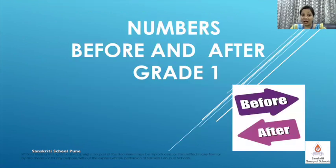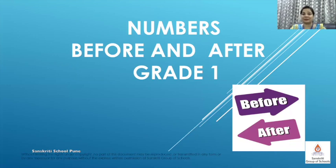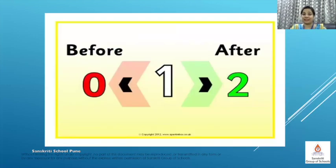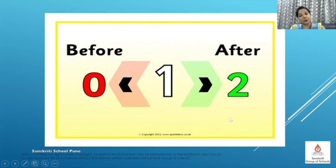Now let's start our session on before and after numbers. We are taking 1 — the number that comes before 1 is 0, and the number that comes after 1 is 2.